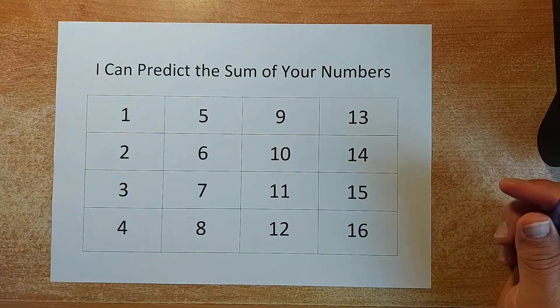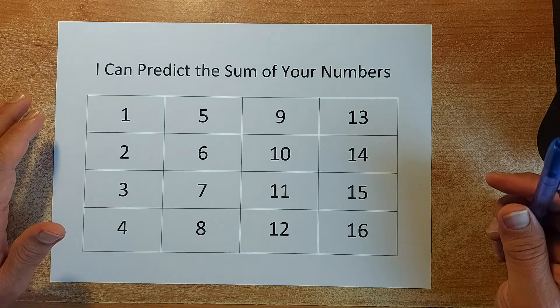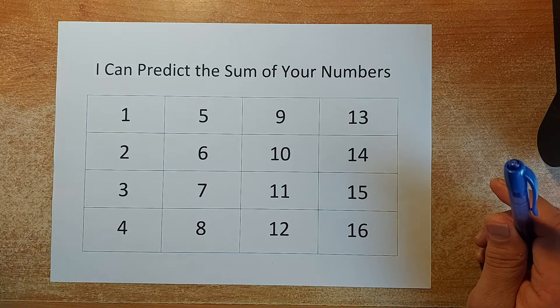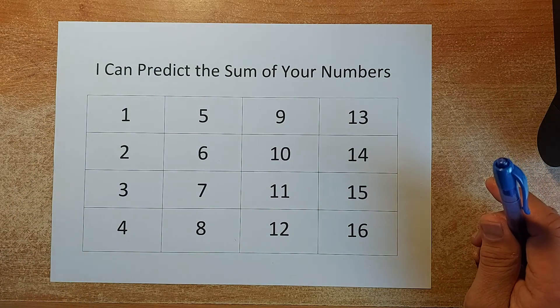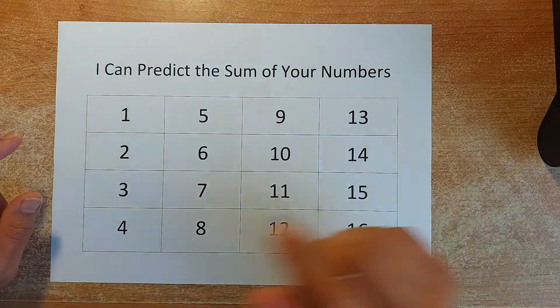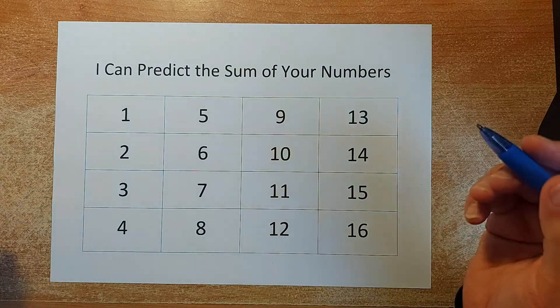Your job is to choose 4 different numbers. From that 4 numbers, I am going to predict the total sum of the 4 numbers you're going to choose. But you have to follow some conditions before you can do this test. So first thing, you can choose any number in the grid. The first number you can choose, you can choose any number you want.